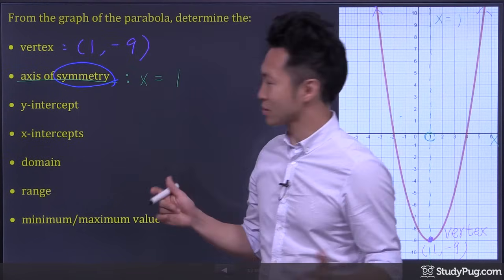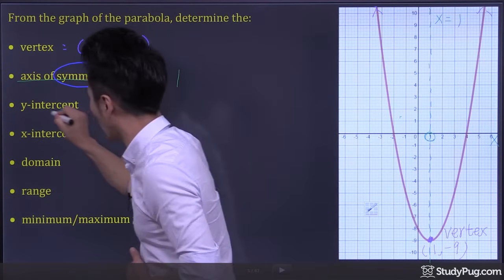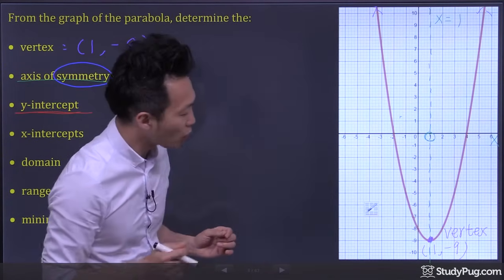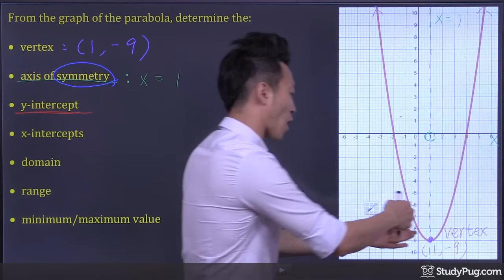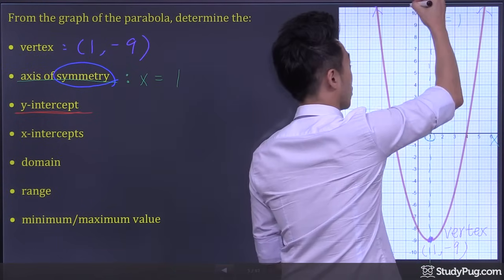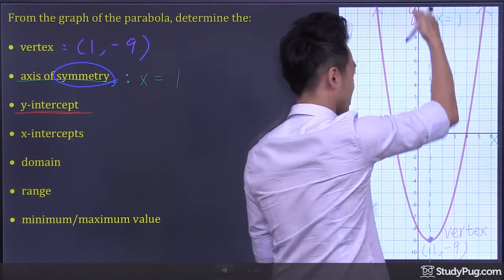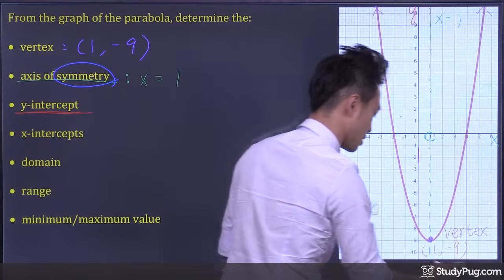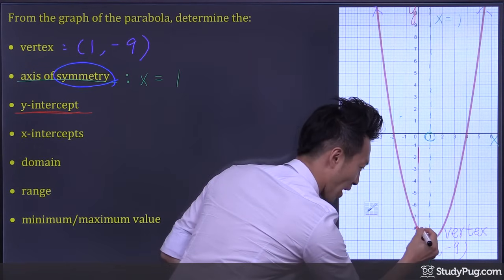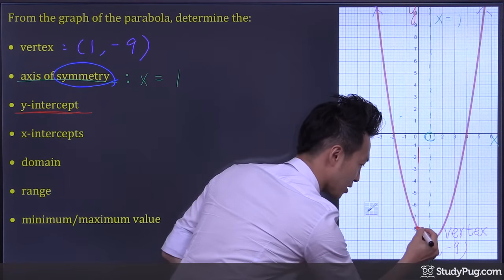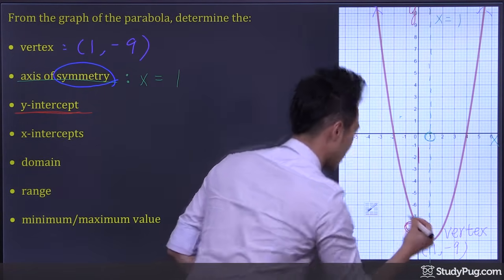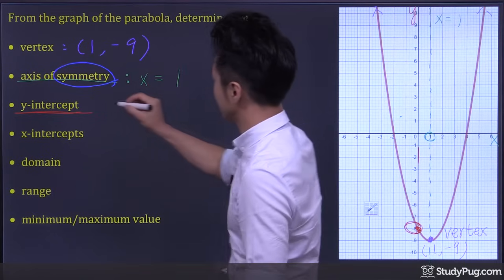Next, y-intercept. The y-intercept is the point where the parabola intersects the y-axis. So in this case, that's right here, and the y-intercept is negative 8.